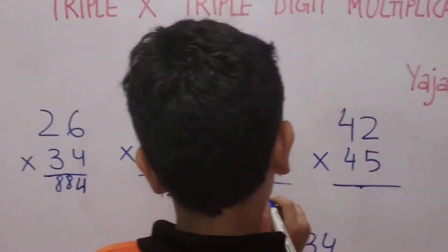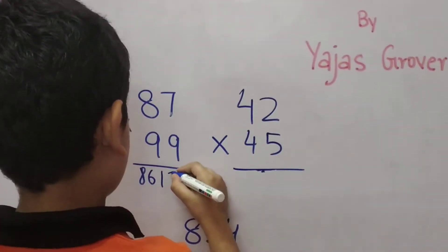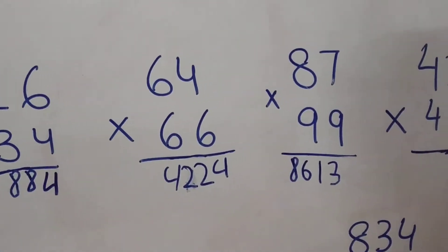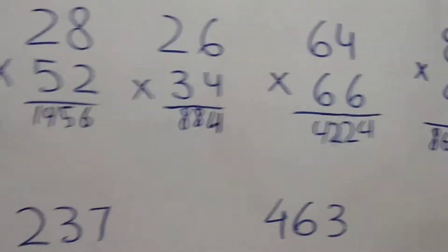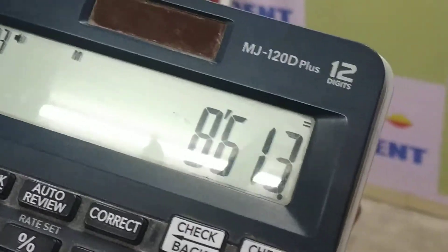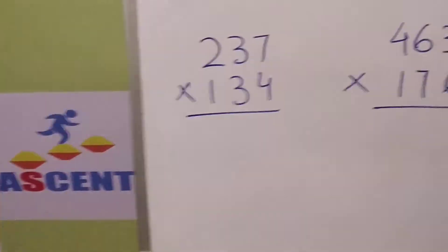And now he moves to 87 into 99. The question is 87 into 99, and his answer is 87 into 99 is 8613. Wonderful.